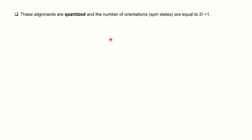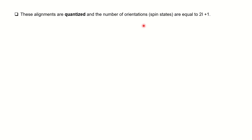These alignments — aligned and opposed — are quantized, and the number of orientation spin states is equal to 2I + 1. This formula tells you how many orientations are possible for a respective nucleus, where I is the spin quantum number, which is associated with the mass number and atomic number of the nuclei. In the case of hydrogen, I is +½, so 2(½) + 1 = 2, meaning only two orientations are possible: +½ and −½. Similarly, you can calculate orientations for nuclei like carbon-13 and nitrogen-15.